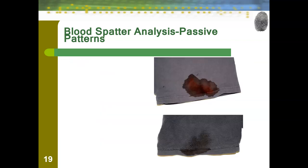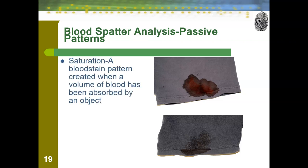Continuing with our passive patterns, we have saturation — a bloodstain pattern created when a volume of blood has been absorbed by an object. Blood can be absorbed by a t-shirt, a pillow, a blanket, anything that's absorptive. Saturations are difficult because the pattern really looks different depending on what side you're on, so it makes it difficult to tell what happened.